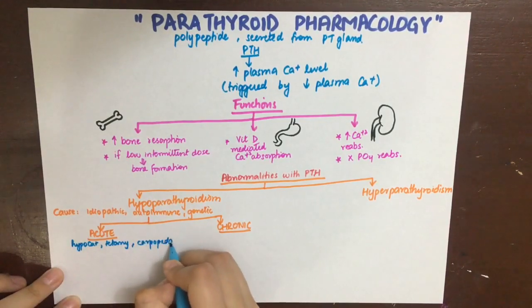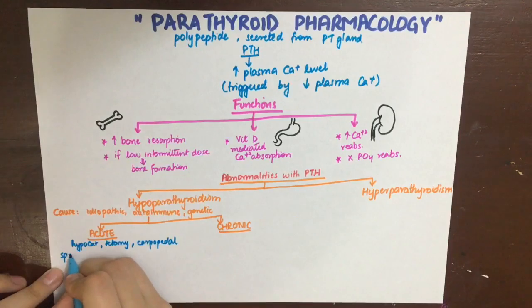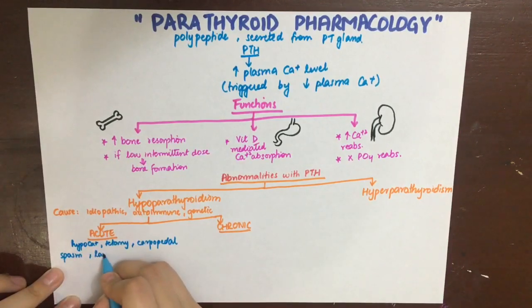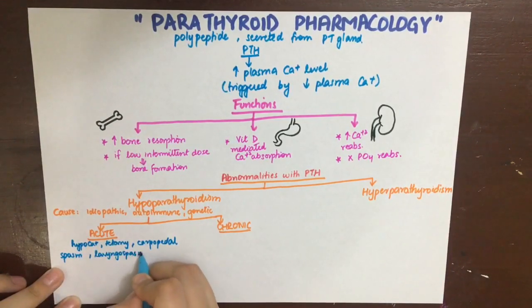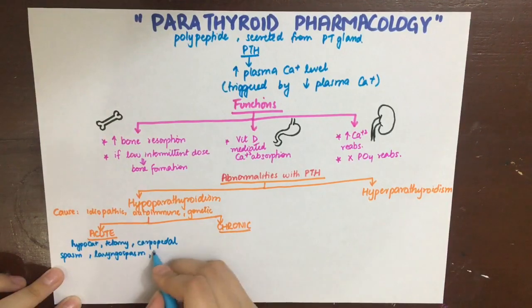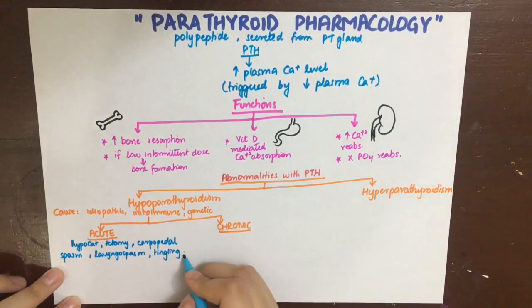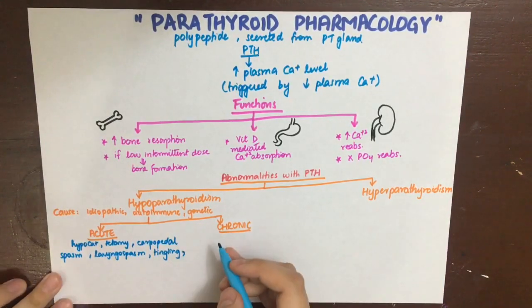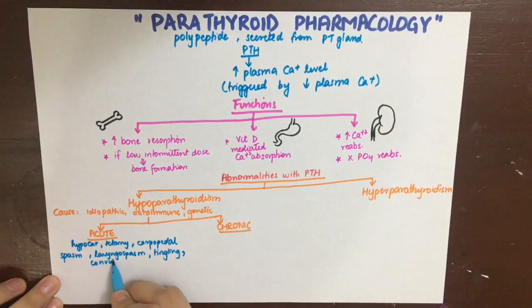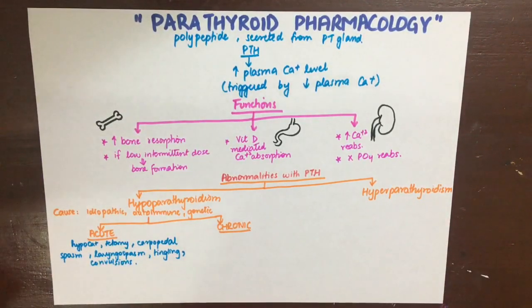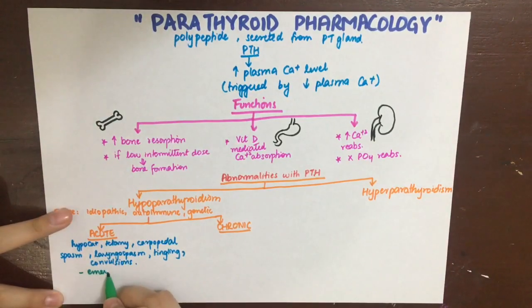Laryngospasm will temporarily make it difficult for the patient to breathe or speak. There can also be tingling of the lips, hands, and muscles, and convergence. To treat acute hypoparathyroidism, it should be managed as a medical emergency with 10% IV calcium gluconate to stop the tetany, and oral calcium salts should be started as soon as possible.